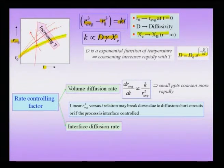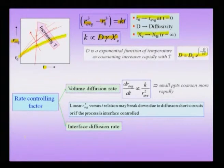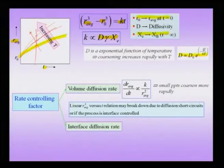The diffusivity discussed here is typically volume diffusion. If there are other mechanisms such as interface diffusion or pipe diffusion along cores of dislocations, then the linear r³ versus t relation may break down. These short-circuit paths, even though they have a smaller cross-section, may tend to dominate especially in nanocrystals.